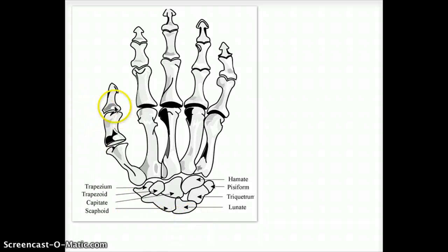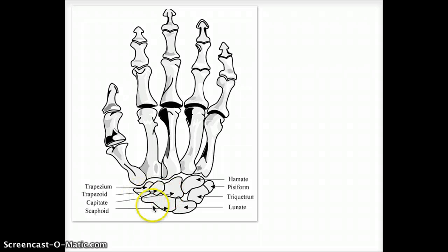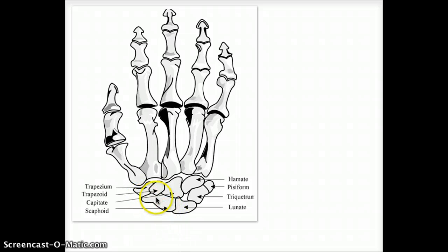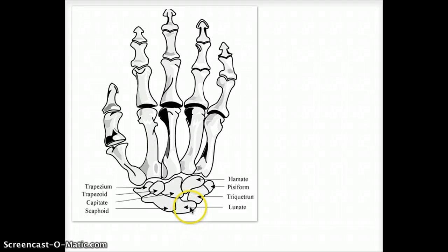So the most proximal metacarpal to the wrist is the scaphoid. That is also the largest metacarpal out there. After the scaphoid is the lunate. Both of these have clinical significance and I will talk about them in a minute.